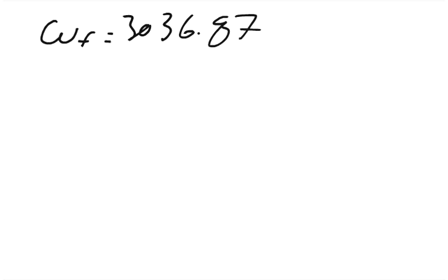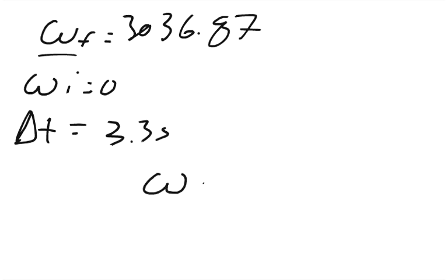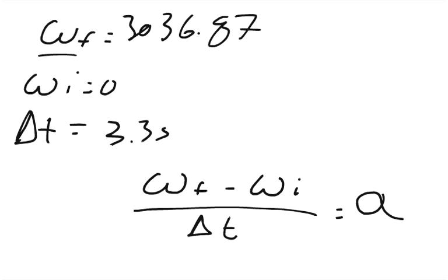And so now we know what the final angular velocity is. We know that the initial angular velocity equals 0 because it started from rest. We know that the change of t equals 3.3 seconds. And so we can set up our equation for angular acceleration, which would be angular velocity final minus angular velocity initial divided by the change of time equals angular acceleration.